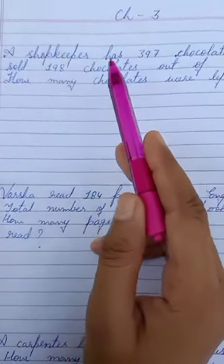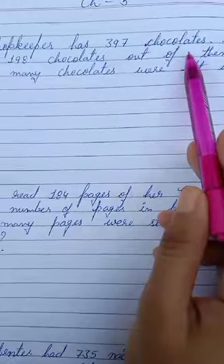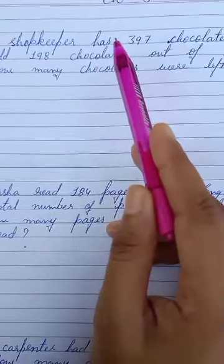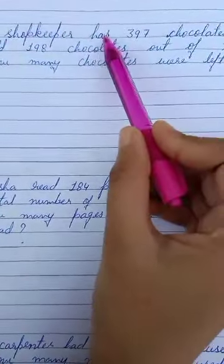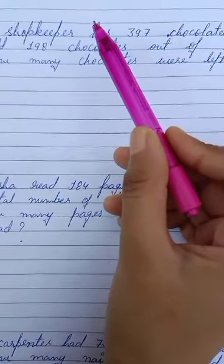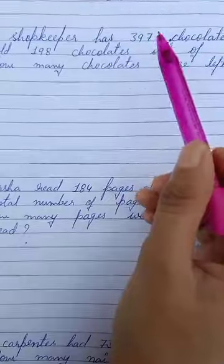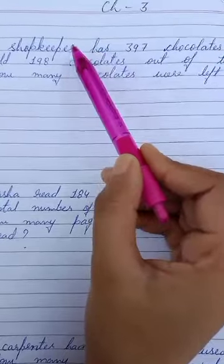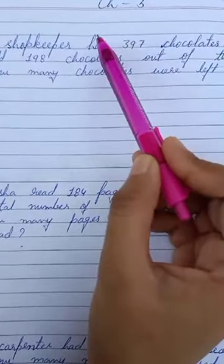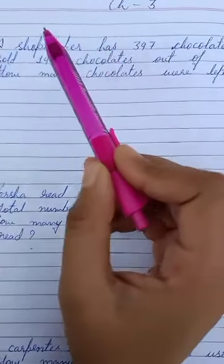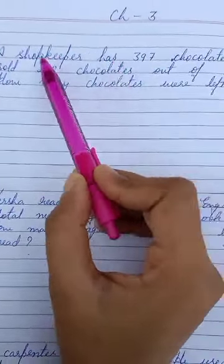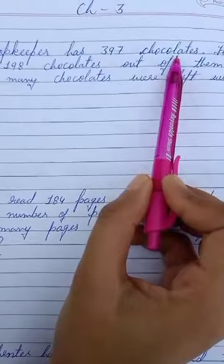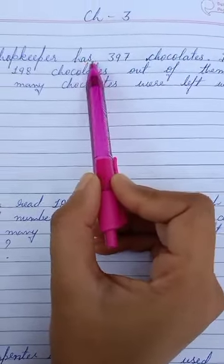A shopkeeper has 397 chocolates. Has - if you have or has have, it means that it has or have. Has or have, it means that it is helping for you. For example, if you have and have a name, then this means that it has something that is there. For example, the shopkeeper has, what kind of things have to be? This means that it has 97 chocolates. Chocolates, how many chocolates are? 397.